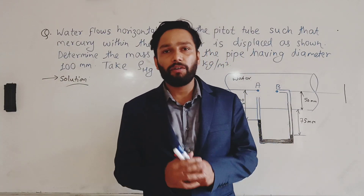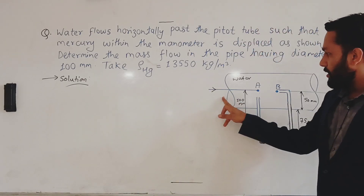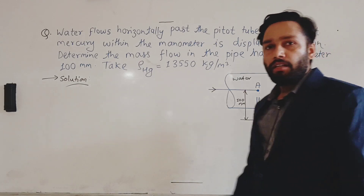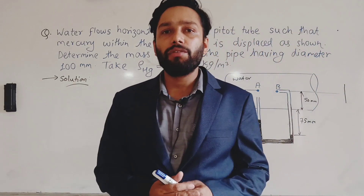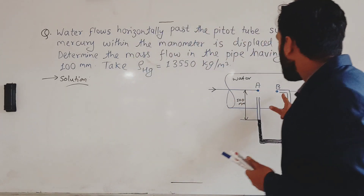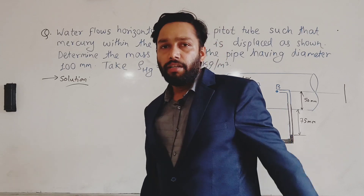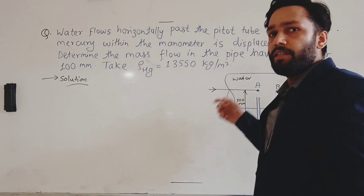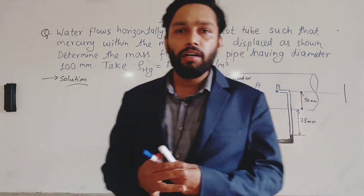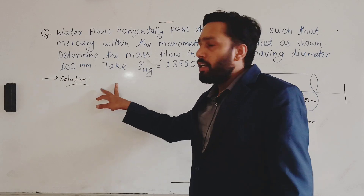Hello everyone, welcome back to my channel. I am Abhishek Poudel. Today I have a problem from fluid mechanics. Here you can see a pipeline carrying water connected to the Pitot tube. This Pitot tube is a device used to measure the velocity of flow inside the pipeline. It is also called the stagnation tube, which makes the flowing water velocity equal to zero, and it is based on Bernoulli's principle. There is another device called the venturimeter which I will cover later.